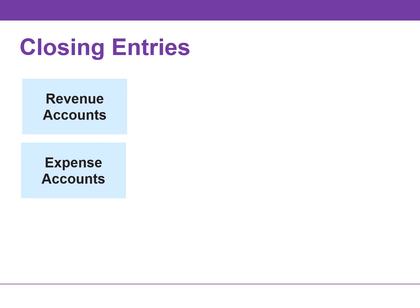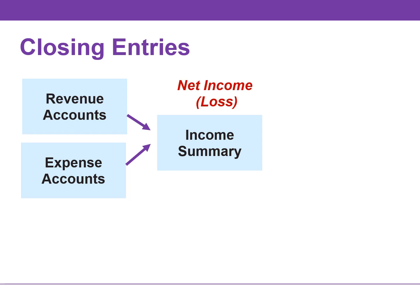Companies close the revenue and expense accounts to another temporary account called income summary. The balance in income summary before it is closed must equal net income or net loss for the period. The income summary account is used only in closing — no entries are posted to this account during the year.